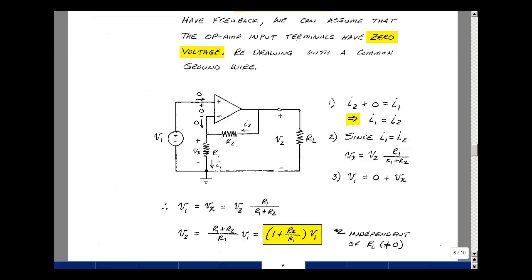Let's do Kirchhoff's current law at this node. The current that enters is I2 plus zero, and what leaves is I1. I1 is equal to I2.